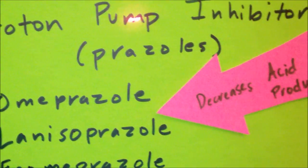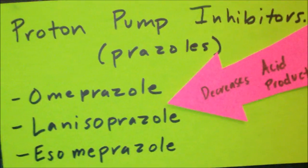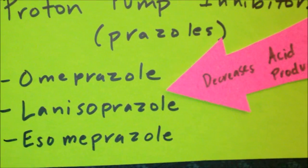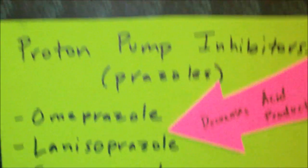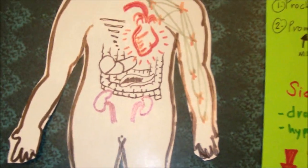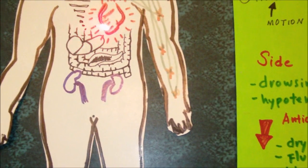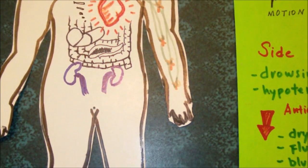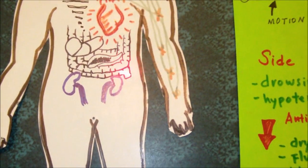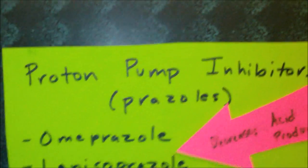Now lastly, let's talk about PPI or proton pump inhibitors. Basically, how these drugs work is that they act at a specific secretory surface receptor, preventing the final step of acid production and therefore decreasing the level of acid within the stomach.